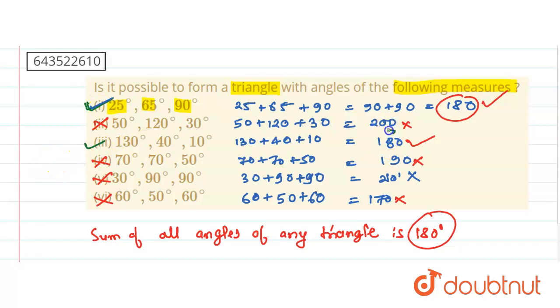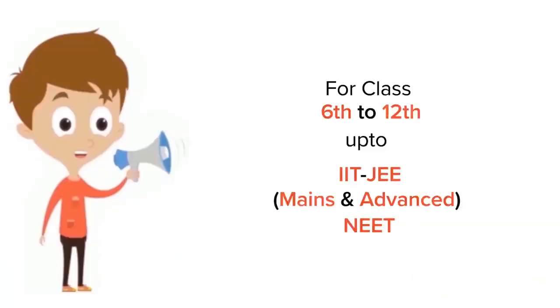So only two options are correct here — the first and the third. We can form a triangle with the help of these two sets of angles. The remaining sets are not possible.